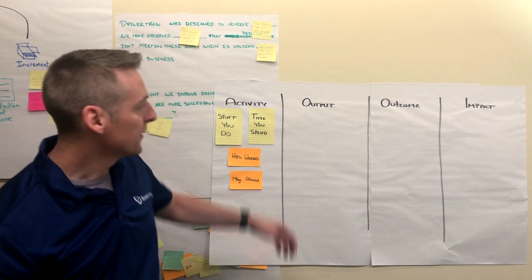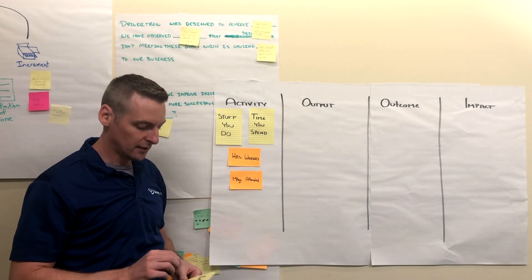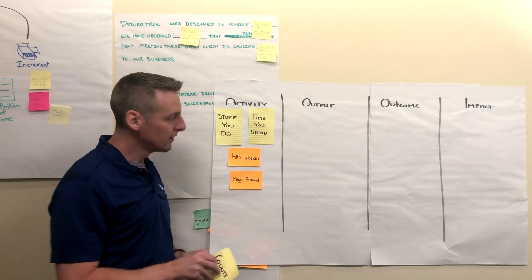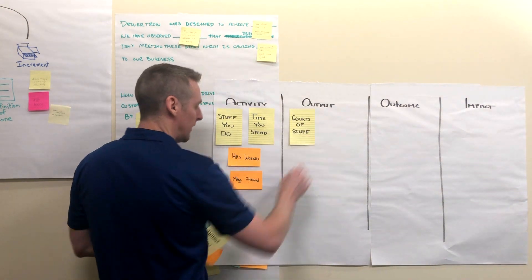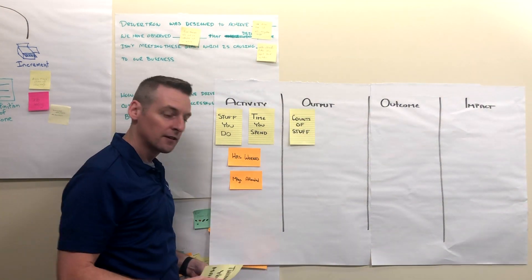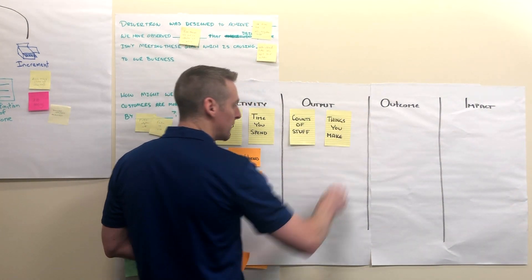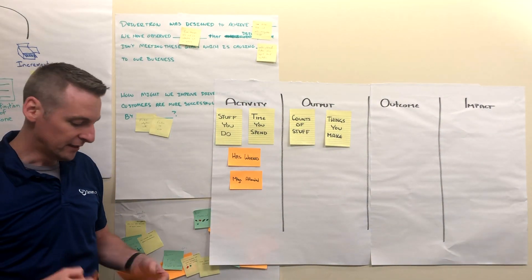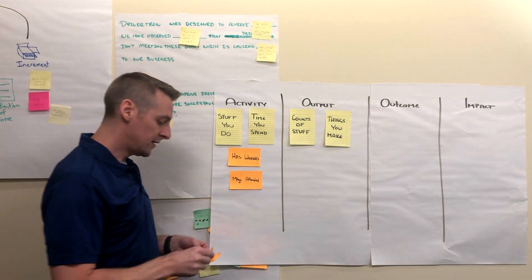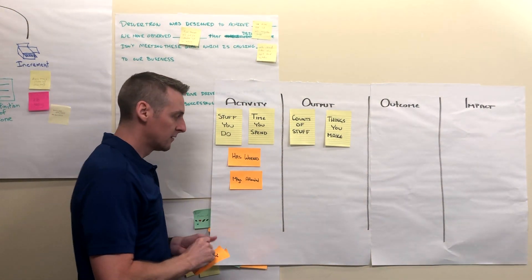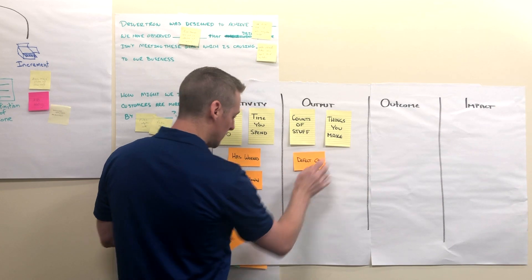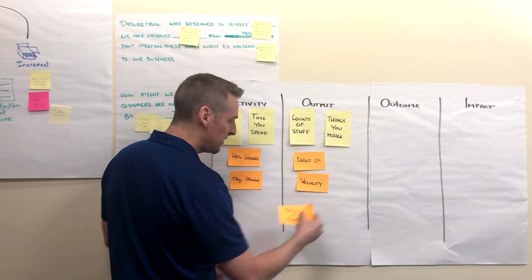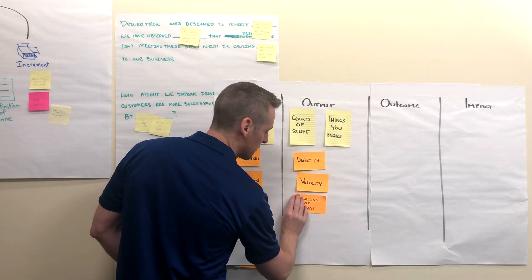Output can be something like counts of stuff, or things you make. A few examples of that might be defect count, maybe velocity, or maybe gallons of sweat.